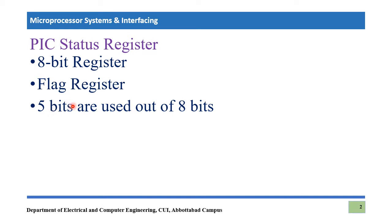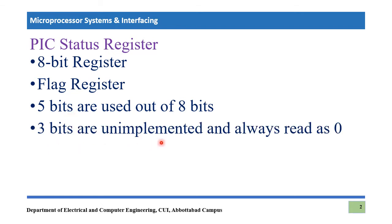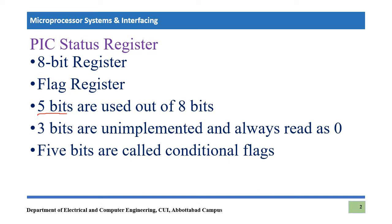Out of 8 bits, only 5 bits are used. That means 3 bits are still unused and not implemented, so those 3 unimplemented bits will always read as 0. The other 5 bits are actually implemented and have specific meanings — they change status, sometimes becoming 0 and sometimes 1. These are basically certain conditions, which is why these 5 bits are known as conditional flags.